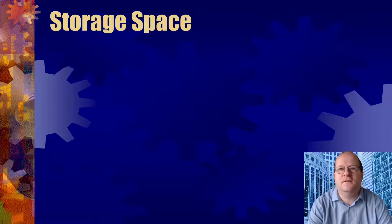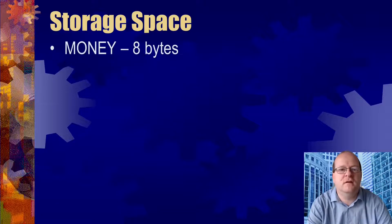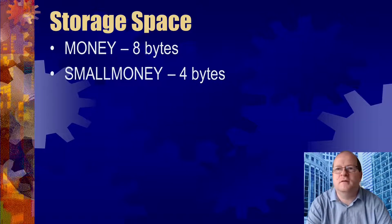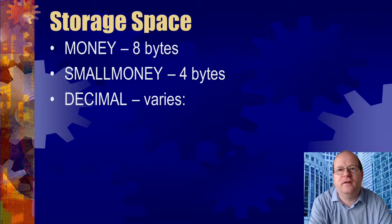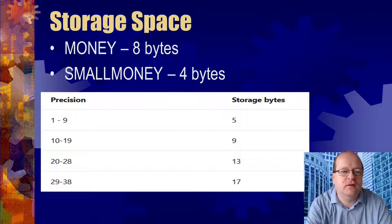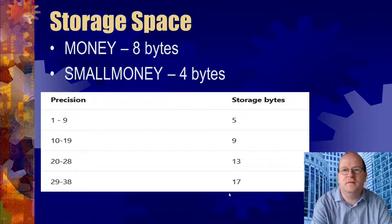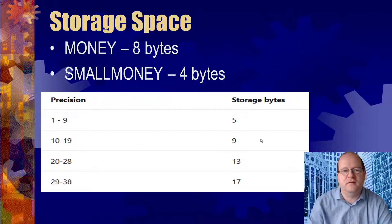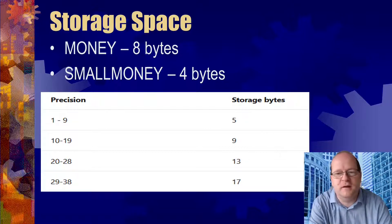Looking at storage space: if you're creating a very large database and space is an issue, consider these factors. The money field takes 8 bytes of storage. Small money, which is good for e-commerce applications, takes only 4 bytes — half as much as a regular money field. The storage space for decimal varies depending on precision. At a precision of 19, decimal(19,4) takes 9 bytes — one extra byte compared to money.